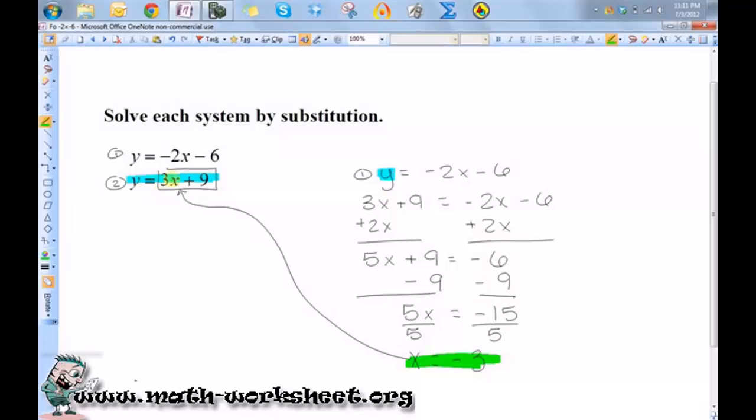So I'm going to take this and plug it in here. So I have y is equal to 3x plus 9, but instead of x I'm going to do negative 3.